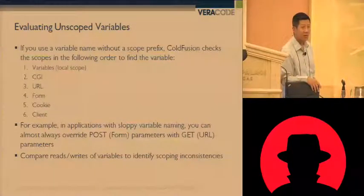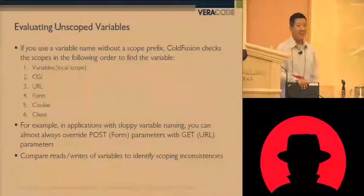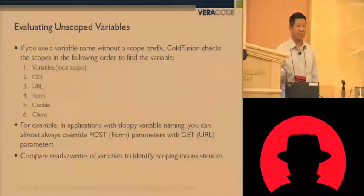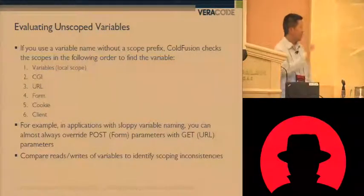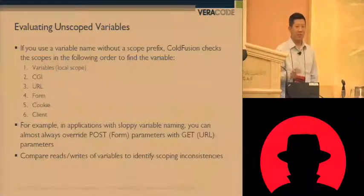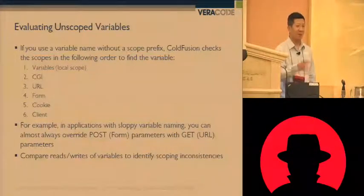Someone asks where the request scope falls in this order. Not all scopes are included in the search — some scopes have to be specified explicitly and will never be automatically searched. The request scope may not be in the search order. There's a link in the white paper to the documentation that lists all twelve scopes that are searched. Some scopes do have to be specified explicitly and will never be automatically searched.